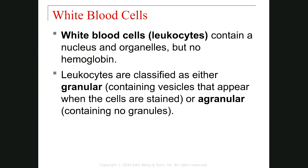Hello again. In the second part of blood, I want to talk about the white blood cells. Unlike the red blood cells, white blood cells or leukocytes have nuclei and a full complement of other organelles, but they don't have any hemoglobin. We can classify leukocytes as either granular leukocytes, which contain vesicles that appear when we stain the cells, or agranular leukocytes, which contain no granules.